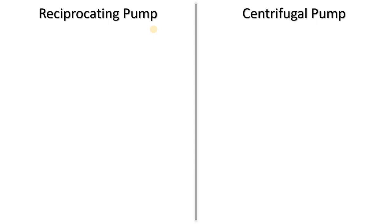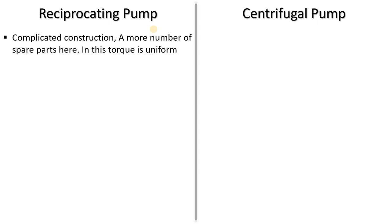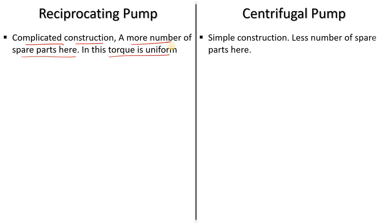The reciprocating pump is complicated in construction with more spare parts — piston, chamber, crank rod, crankcase — while the centrifugal pump is simple with mainly just an impeller and casing, and fewer spare parts. The torque in a centrifugal pump is uniform, while in a reciprocating pump it is not.